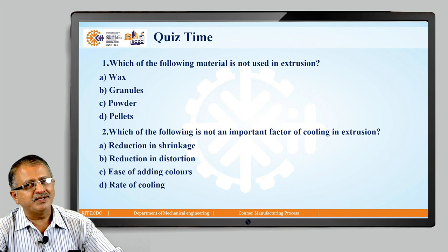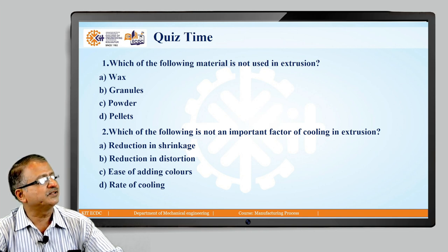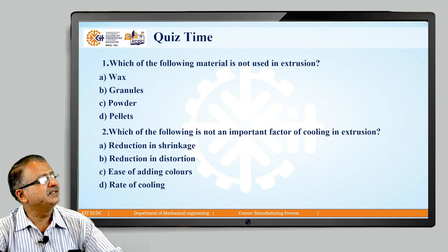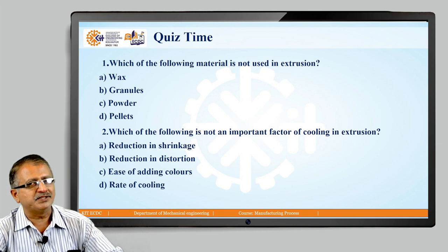Quiz time. Question 1: Which of the following material is not used in extrusion? Options: wax, granules, powder, and pellets. The answer is wax — granules, powder, and pellets are very commonly used as materials in the extrusion process.